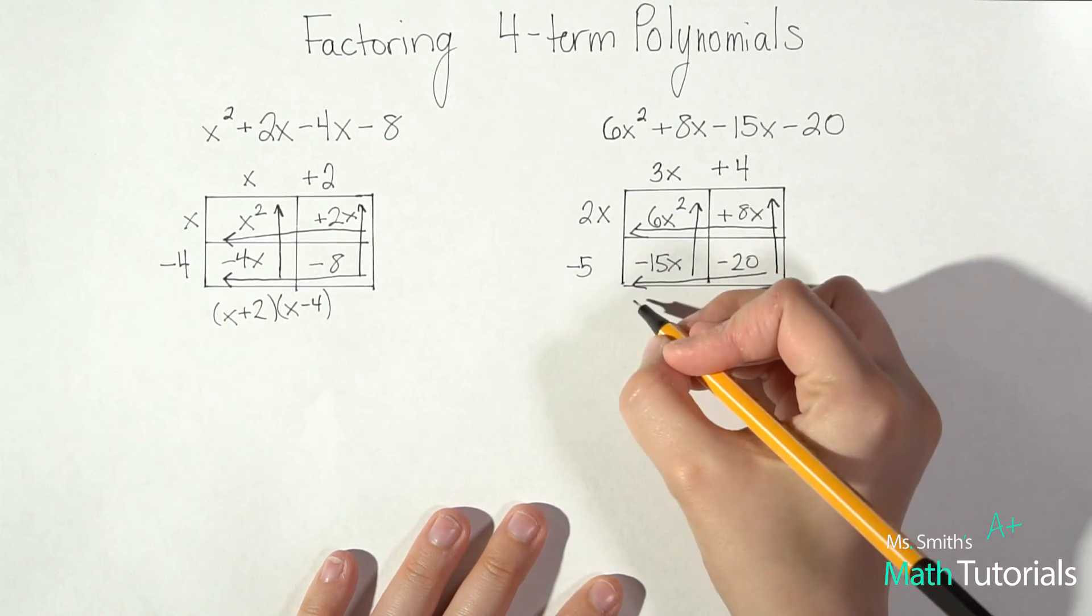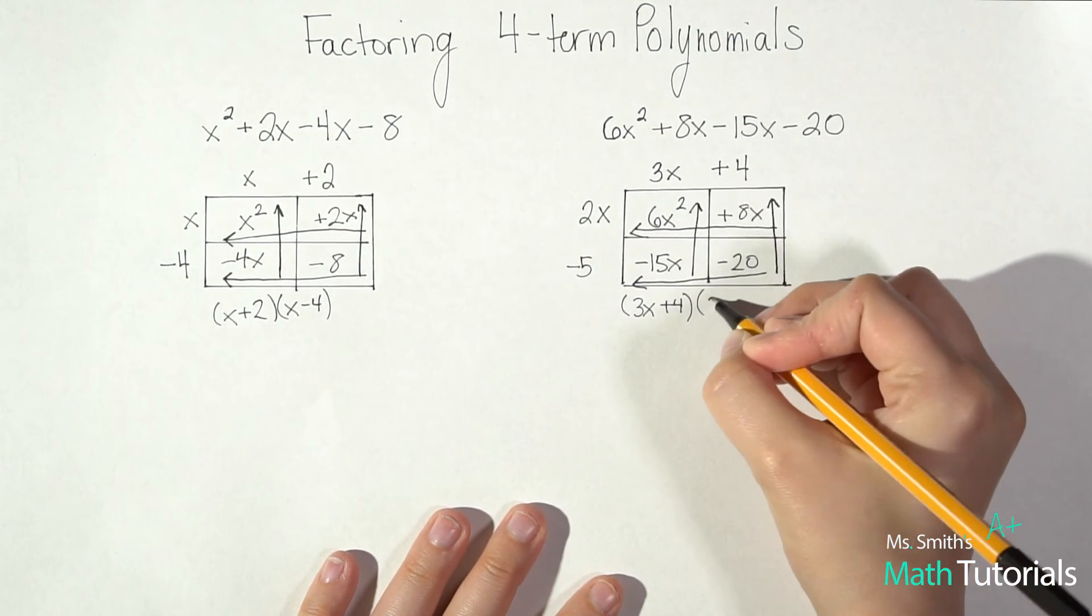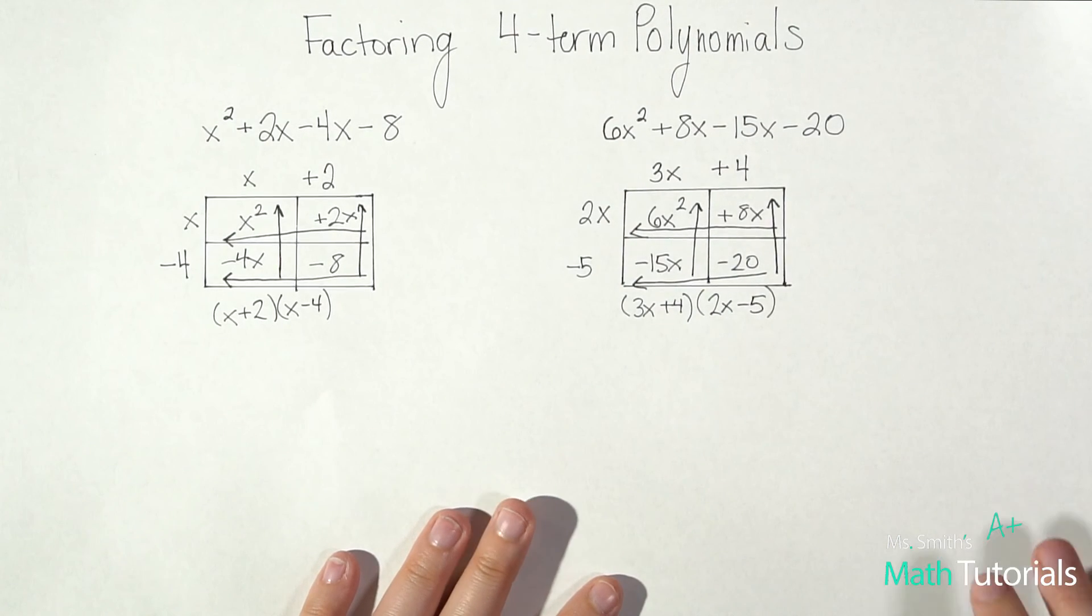So now I have my two binomials. I've got 3x plus 4 and 2x minus 5. That would be our answer.